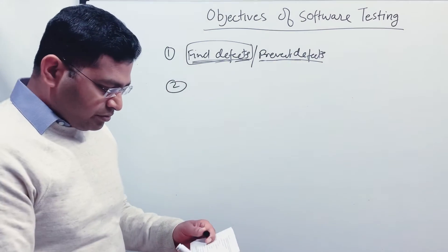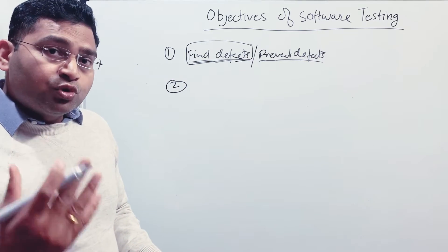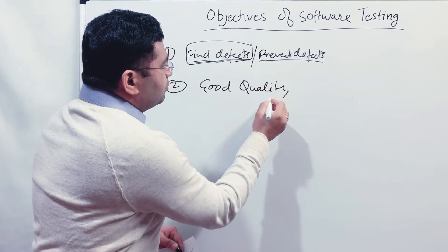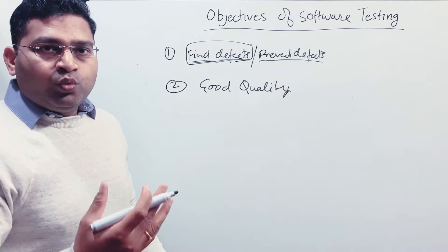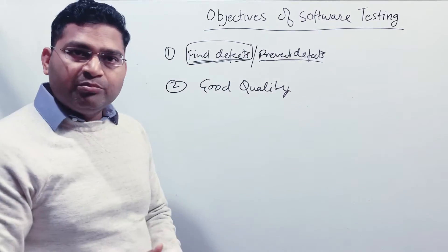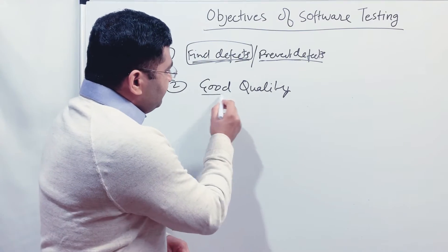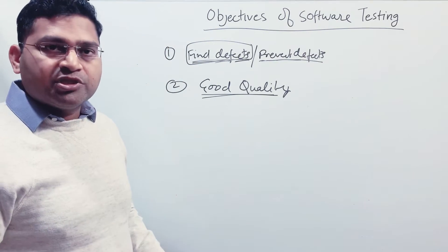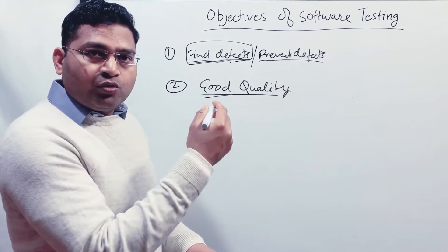The second objective is to ensure that the product is of good quality. How do you ensure that? You found the defects, which in turn will improve the product — the most obvious failures in the product will be found very early when you are testing. Which in turn gives you a better quality product. The more you test, the better that particular software becomes.